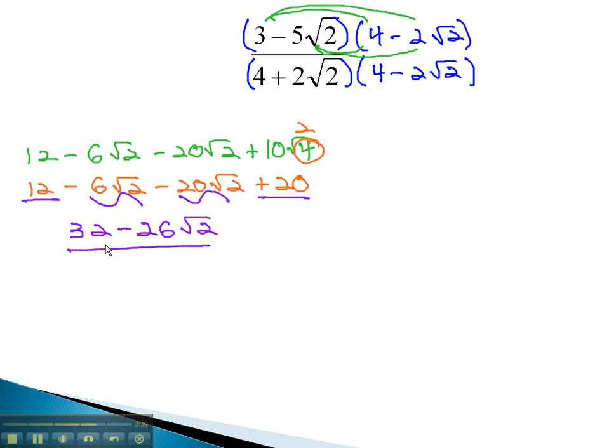And this is going to be over our denominator. Let's take a look at our denominator. Multiplying the conjugate, 4 times 4 is 16. 2 times negative 2 is negative 4, and then when we multiply the square roots, 2 times 2 is also 4, but the square root of this is 2. This means we have 16 minus 4 times 2, or 8. And 16 minus 8 is simply 8.